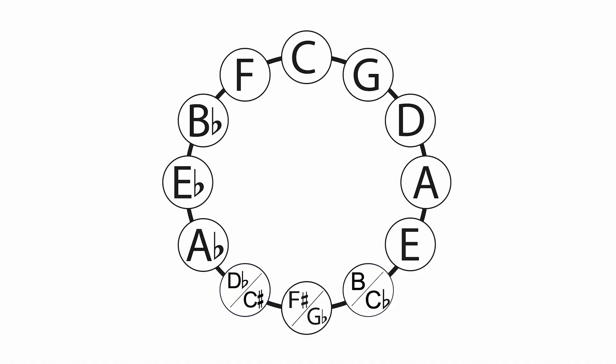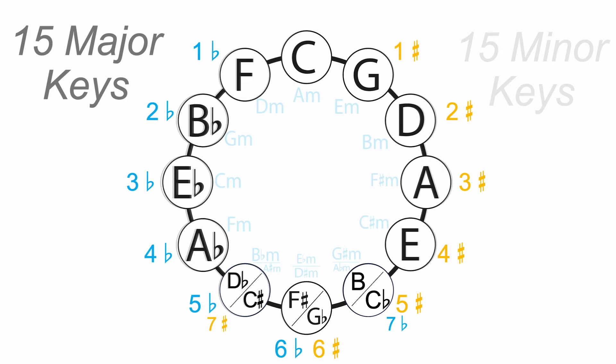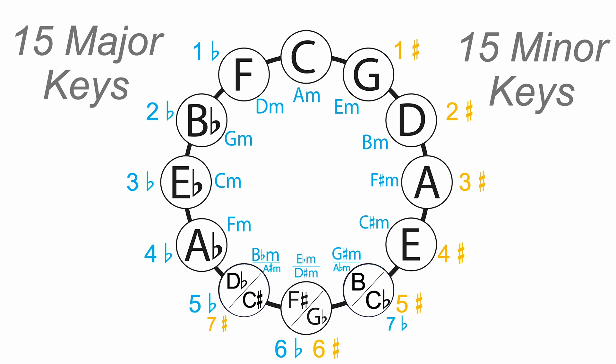When thinking about all of the key signatures that we have available, sometimes it gets really easy to be bogged down by how many there are. How do we memorize all 15 major keys? And then we think about all of the minor keys — there's another 15 keys to think about. So there's 30 keys in all. That's a lot of keys to memorize: 30 key signatures, 15 major, 15 minor. 30 keys is a lot to keep track of easily and quickly.